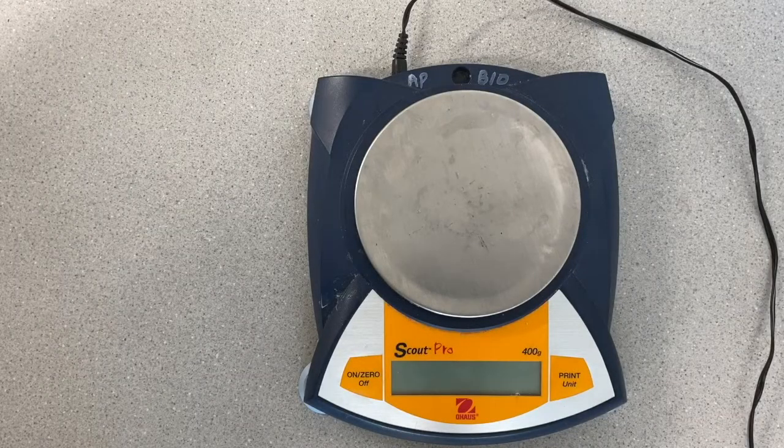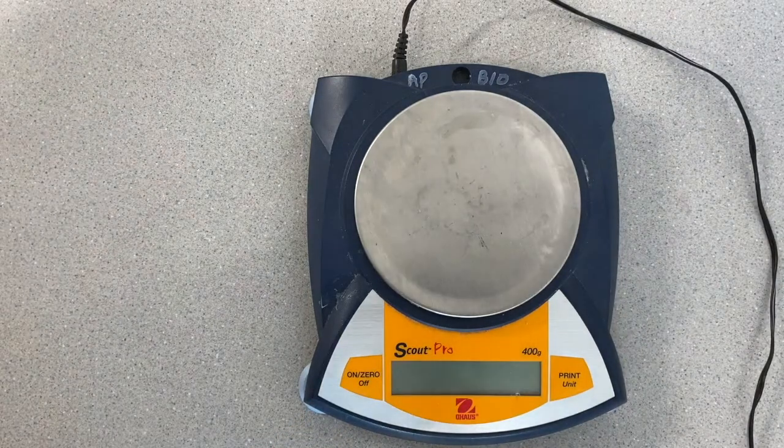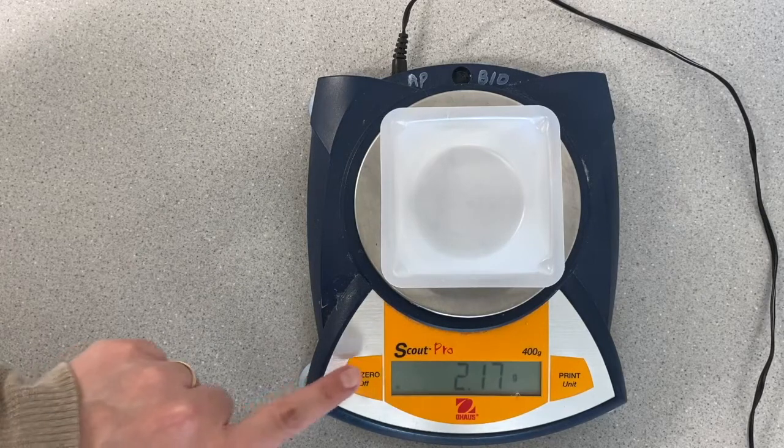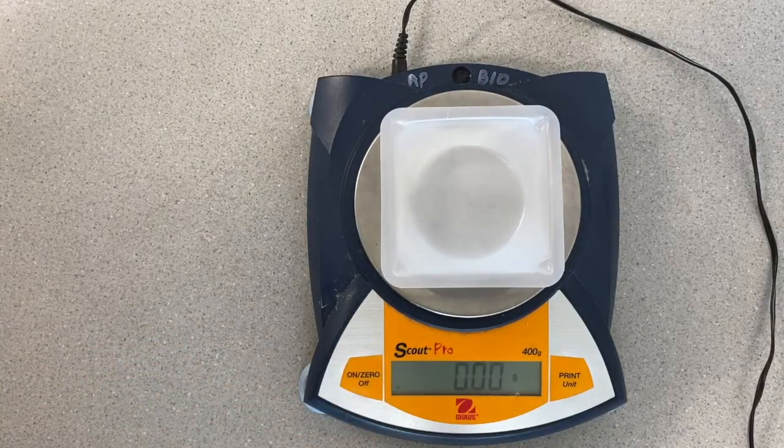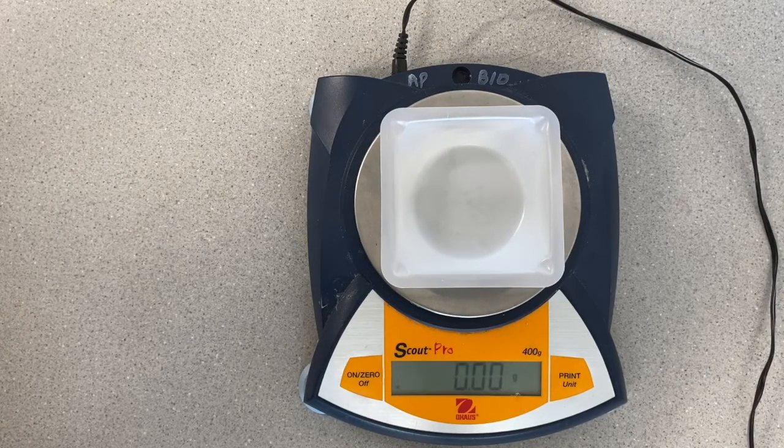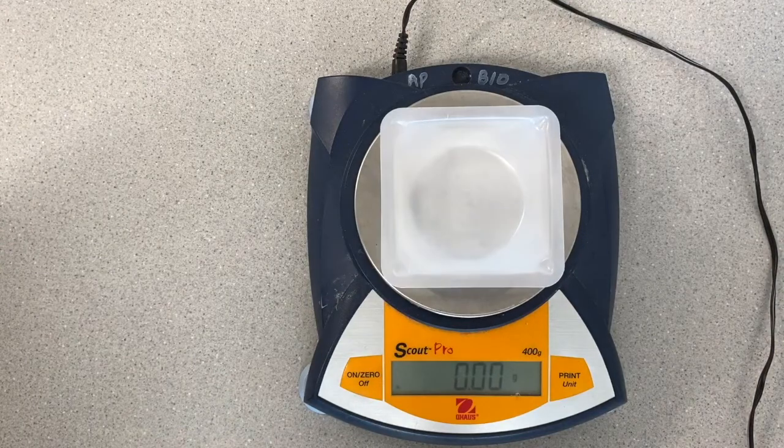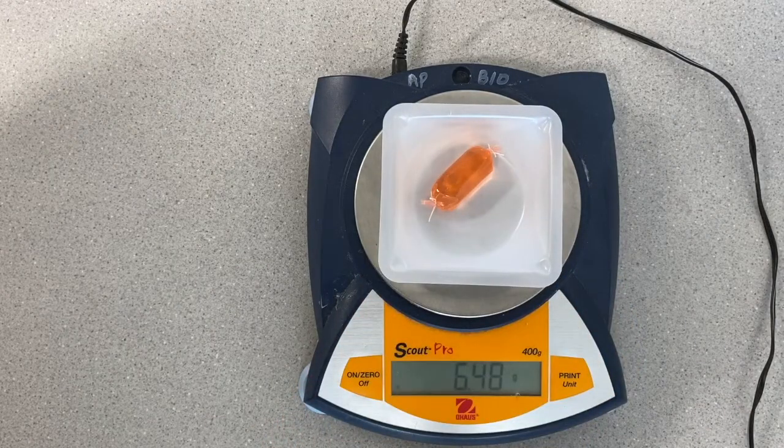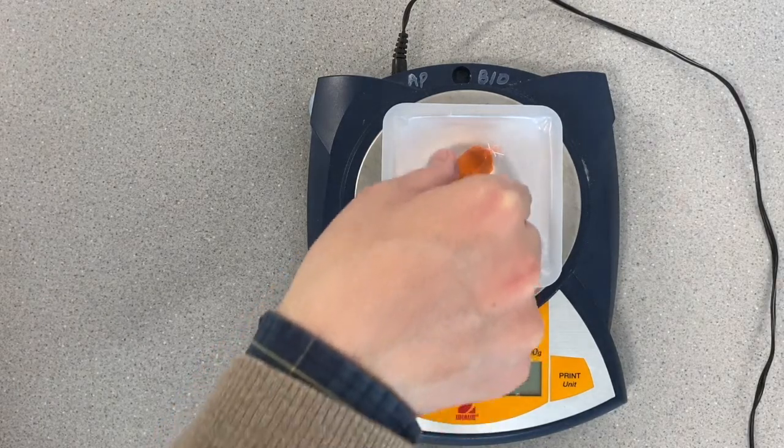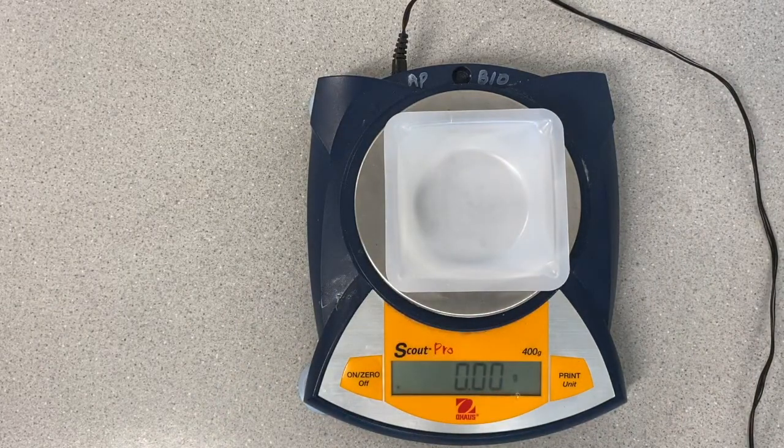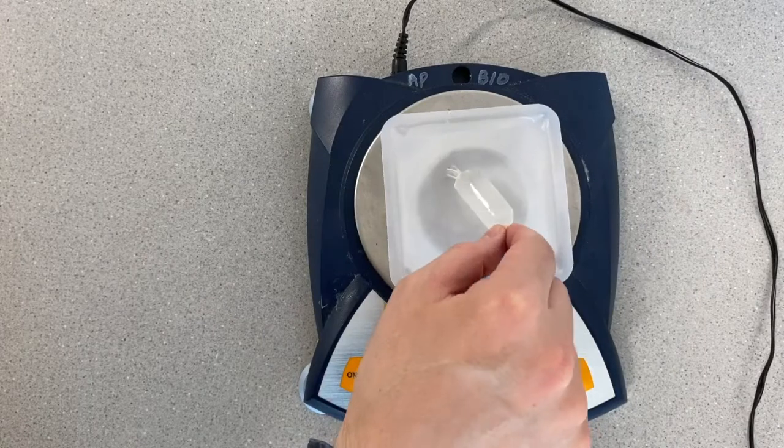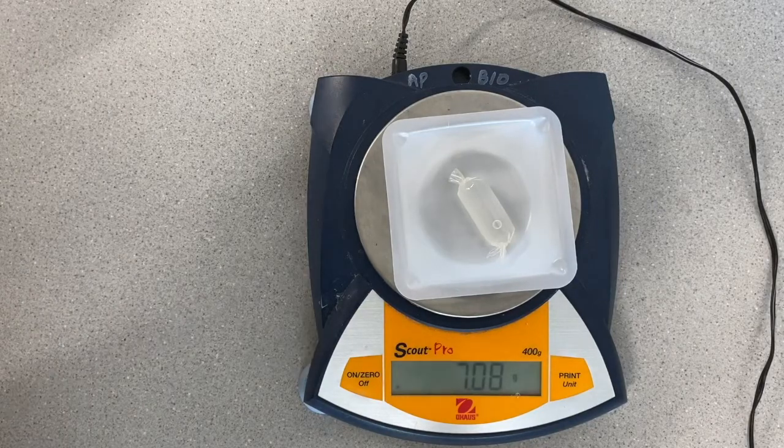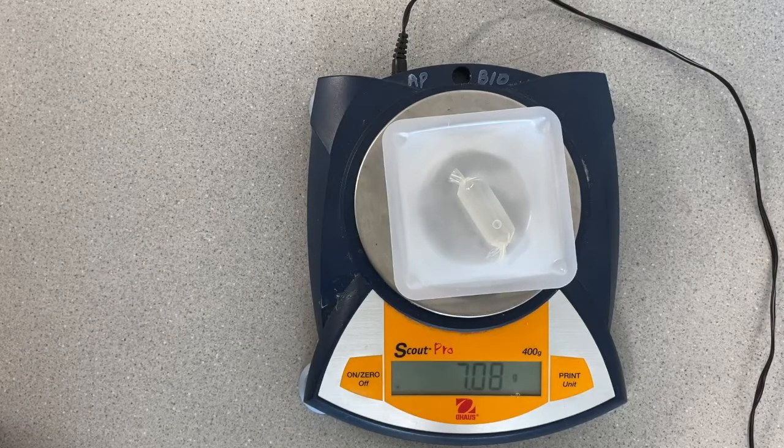Next, we're going to measure the initial mass of both of our cell models. And because that weigh boat has a little mass of its own, 2.17 grams, I'm going to press zero and it's going to ignore that. Now it reads as zero grams. So anything we add to it will be the weight of just our cell model and none of the weight of the weighing boat. So first I'm going to go ahead and take the mass of my glucose cell. And after I've written that down, I can take that out and then take the mass of my starch cell. This will allow me to detect any changes in mass due to diffusion or osmosis after we put this cell model into a beaker of distilled water.